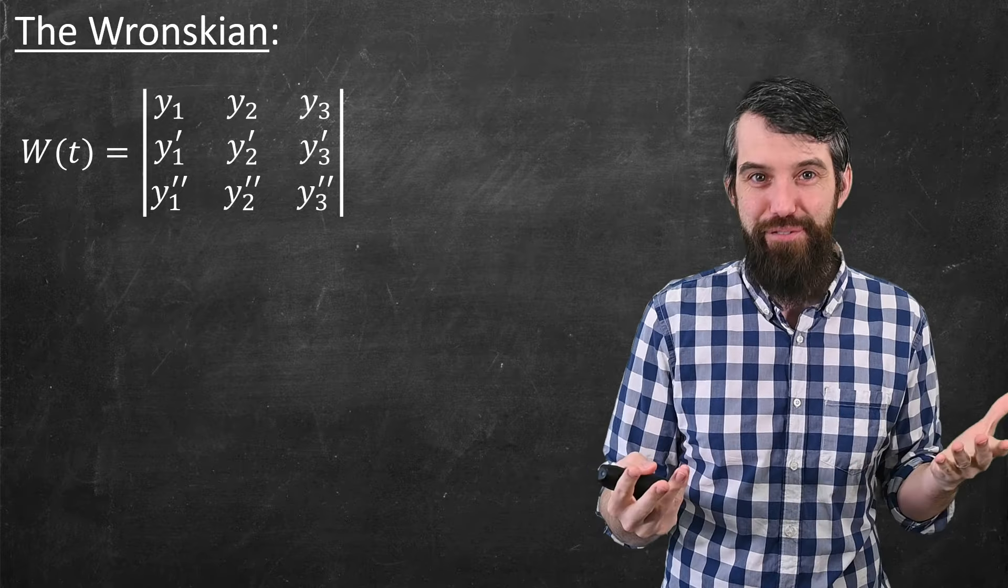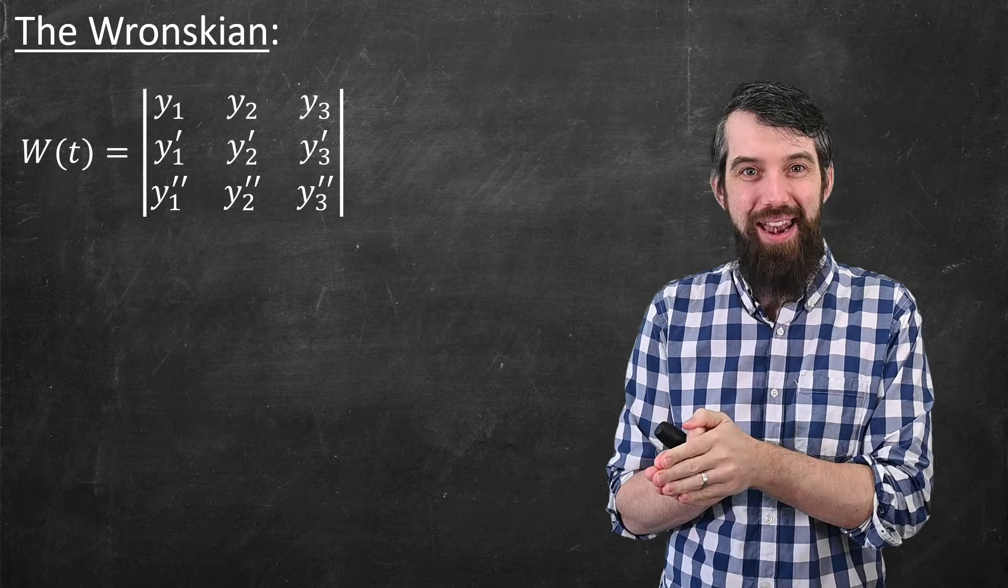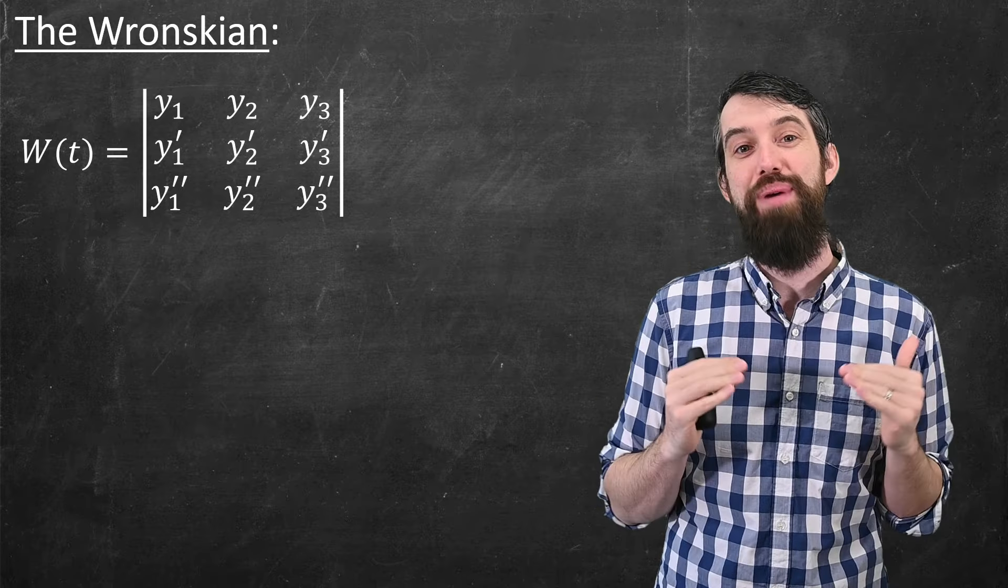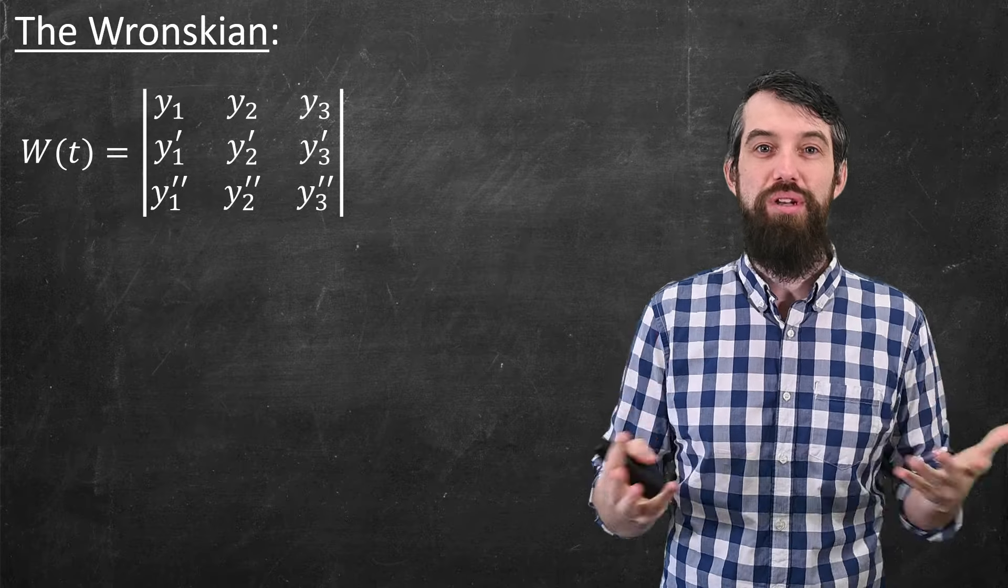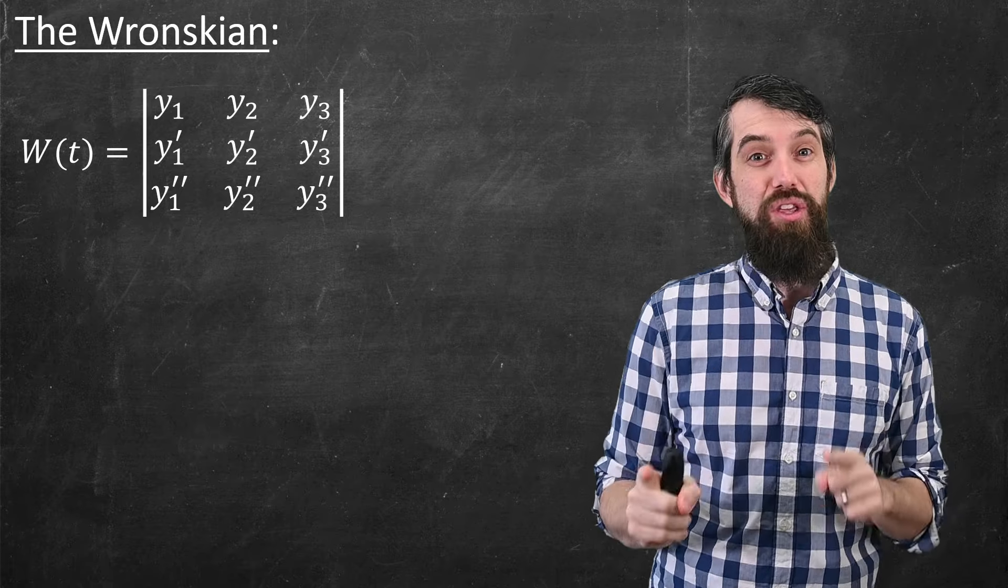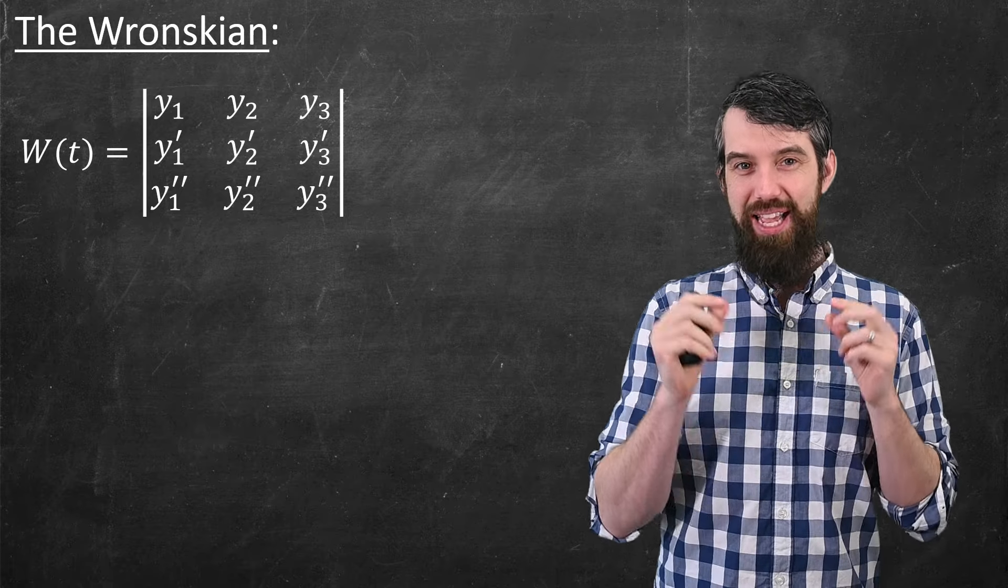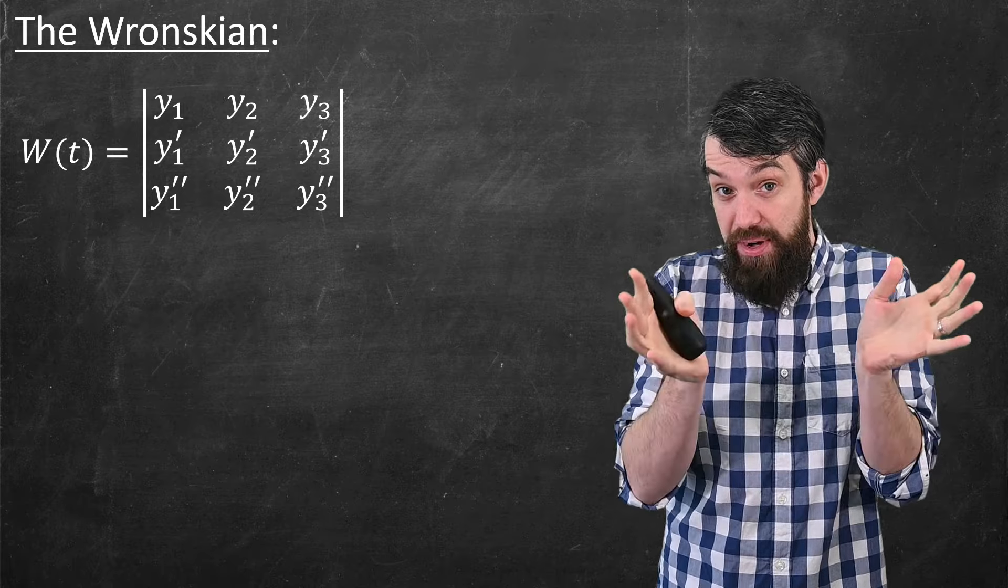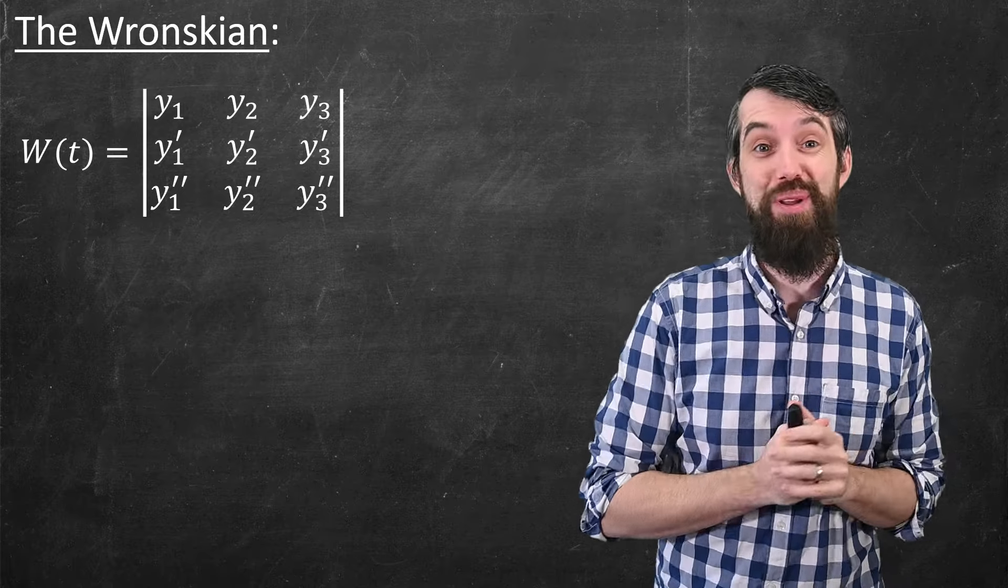I'm doing the Wronskian in three dimensions, but you can imagine doing it with n different functions. You'd have y₁ up to yₙ, with no derivatives down to n-1 derivatives. So you can do this in any number of dimensions. And what we're going to use in a moment is a connection between linear independence and this determinant of the Wronskian.